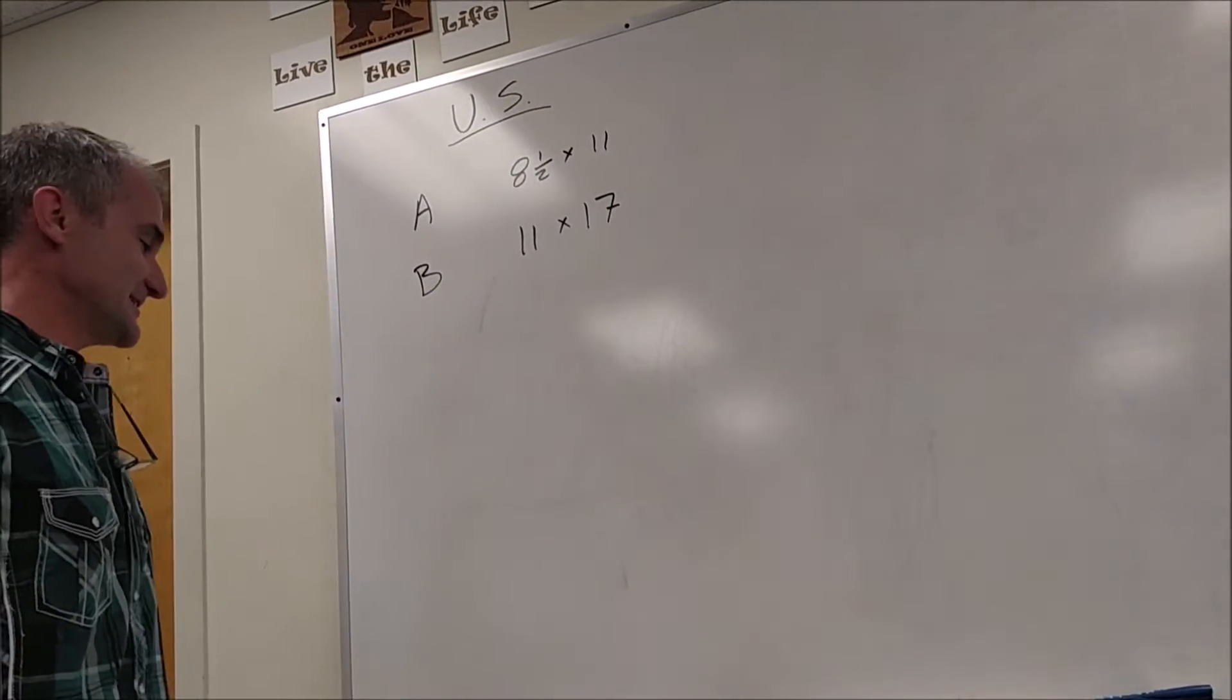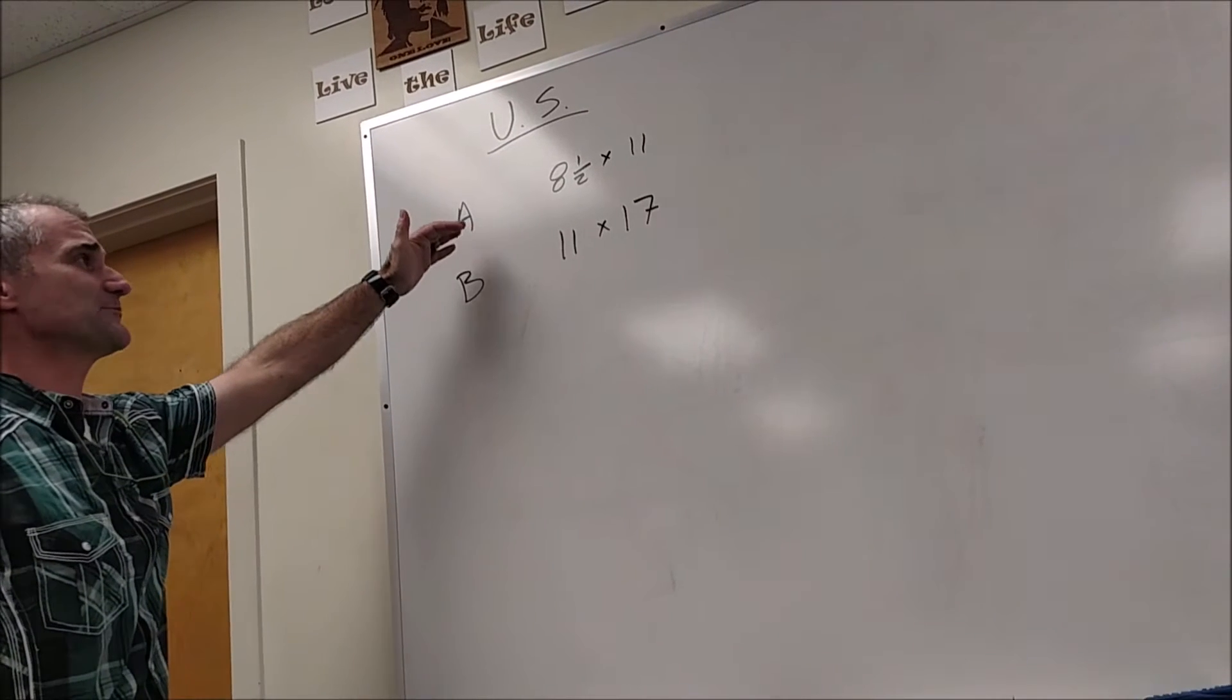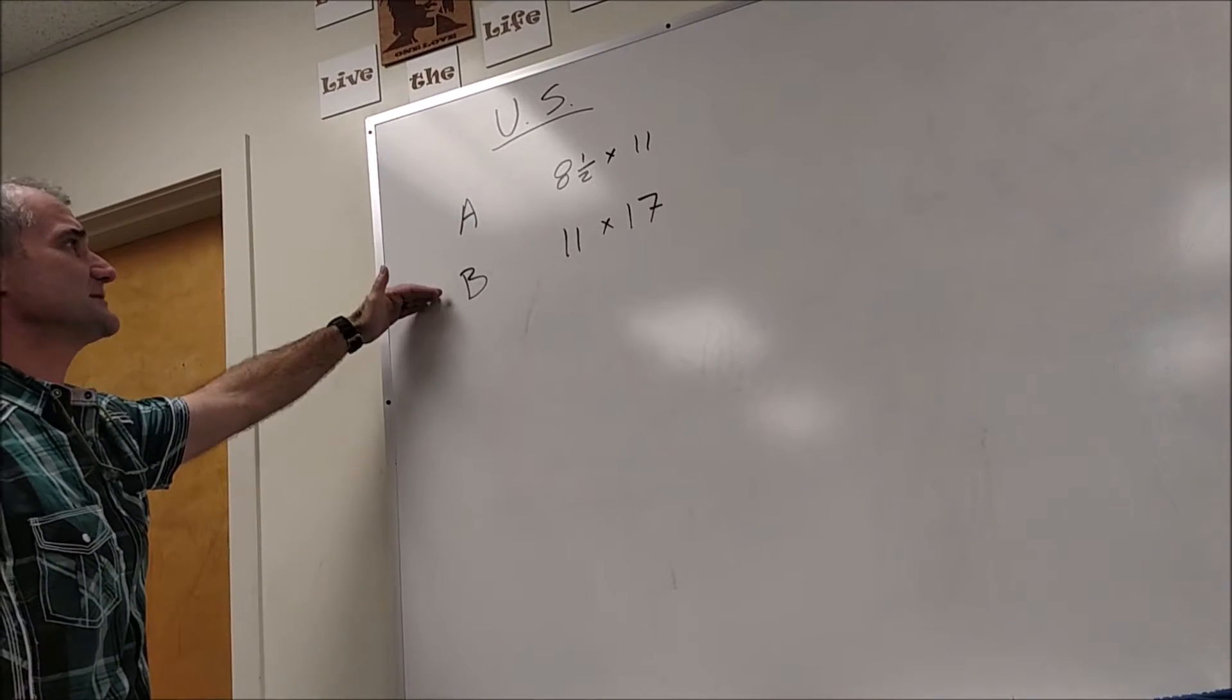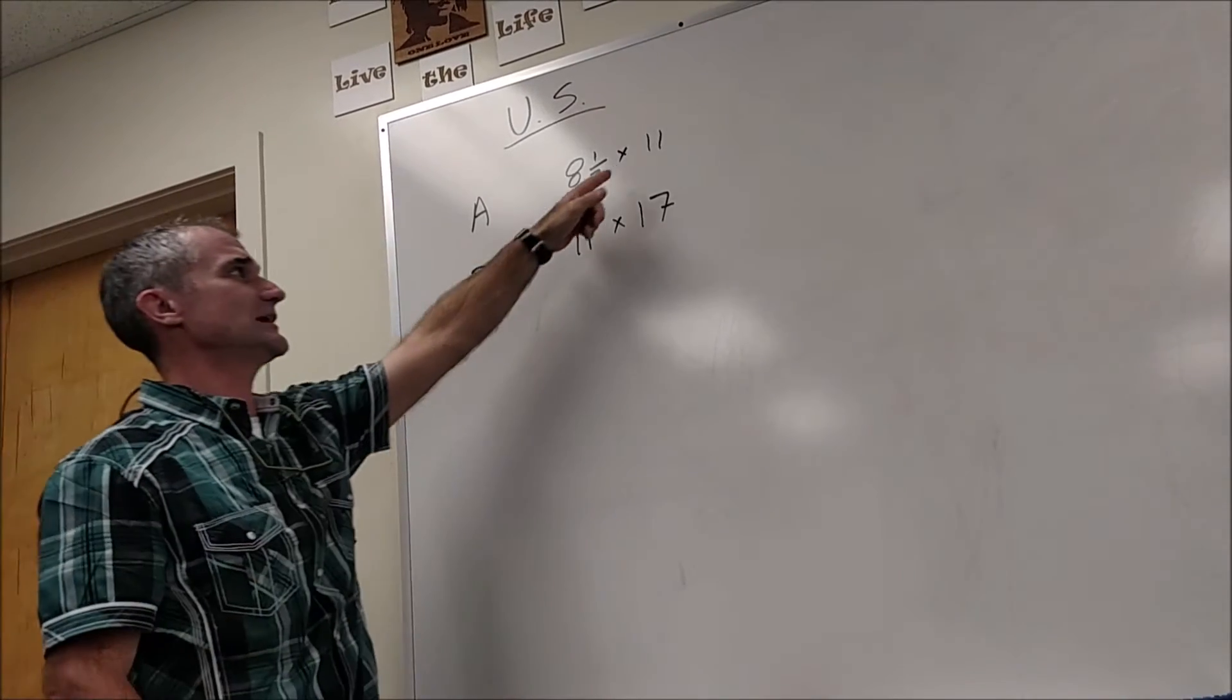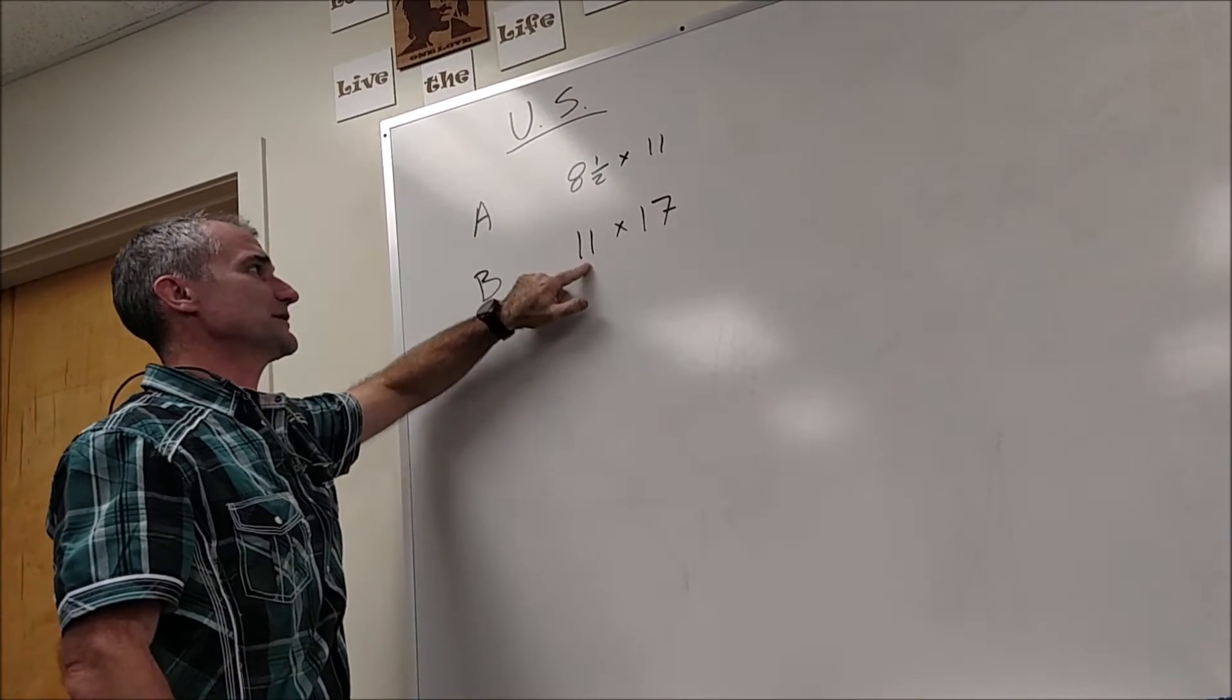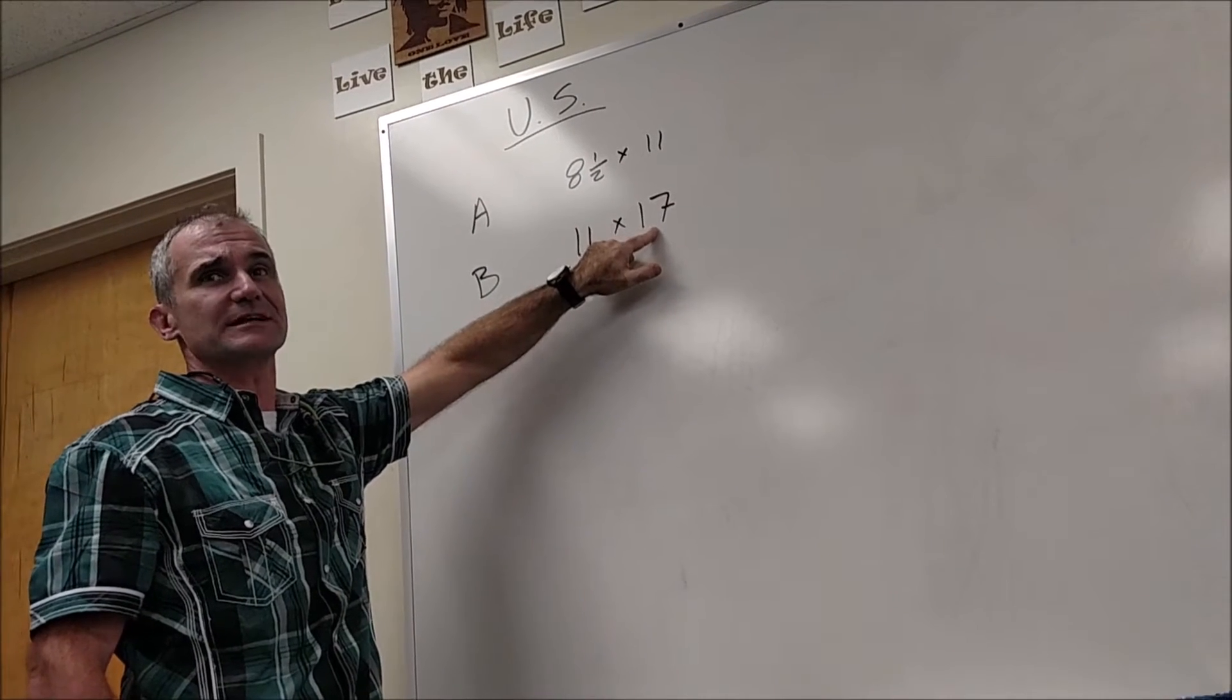Okay, so how paper sizes in the US work is A size paper is eight and a half by eleven, and then B size paper you take that page and you double it. So the way you double it is you take the larger measurement and that becomes the width, and you double the shorter measurement and that becomes the length.